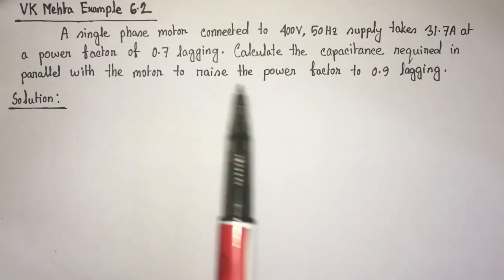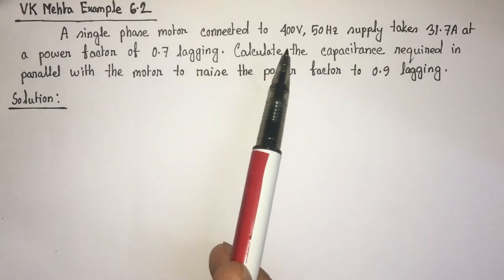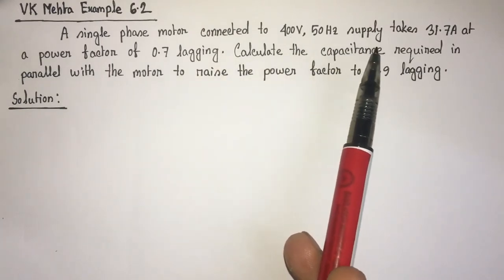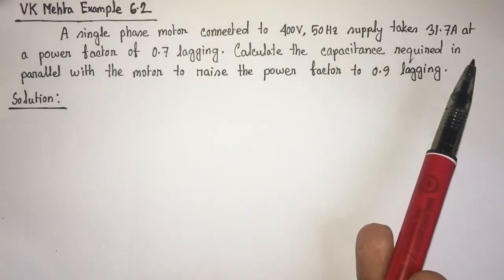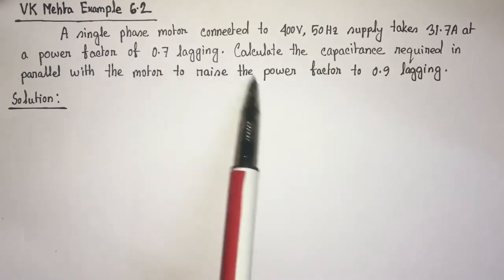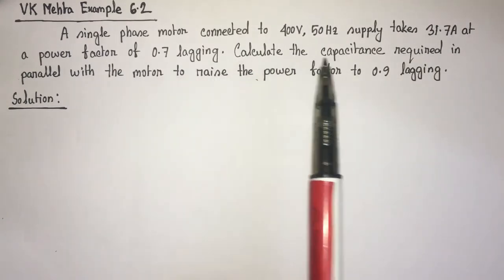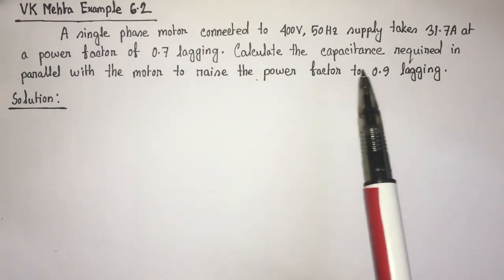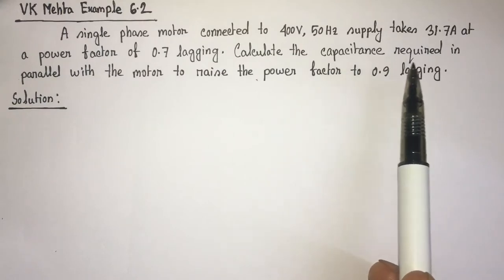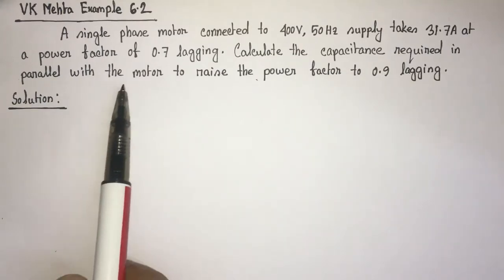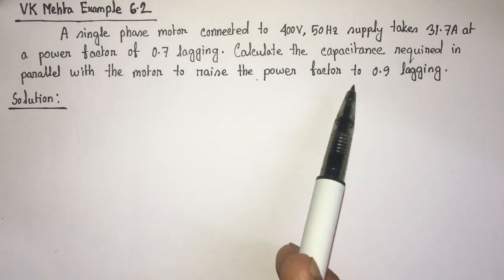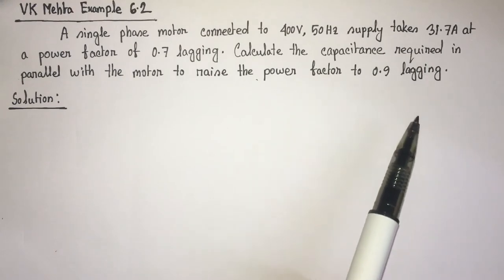Here, a single-phase motor is connected to a 400V, 50Hz supply and takes 31.7A current at a power factor of 0.7 lagging. We have to identify the value of capacitance required in parallel with the motor to raise the power factor to 0.9 lagging.